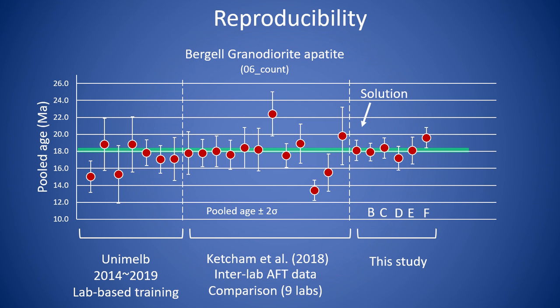Data presented here show the Bergl granodiorite apatite. This apatite is one of the 20 reference samples used by our group over the last seven years and by Ketcham et al.'s 2018 interlaboratory study as well, and it is used as a flagship sample to assess age reproducibility in this study.